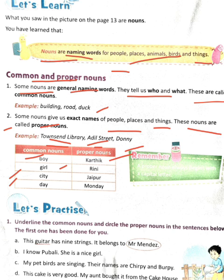A girl could be Seema, Rekha, or Mini — any girl. We don't know which one. But when we use the exact name like 'Rini,' then we know it's a proper noun referring specifically to Rini. Similarly, 'city' is a common noun — it could be any city in India or another country. But when we say 'Jaipur,' we understand exactly which city is being discussed — only Jaipur.